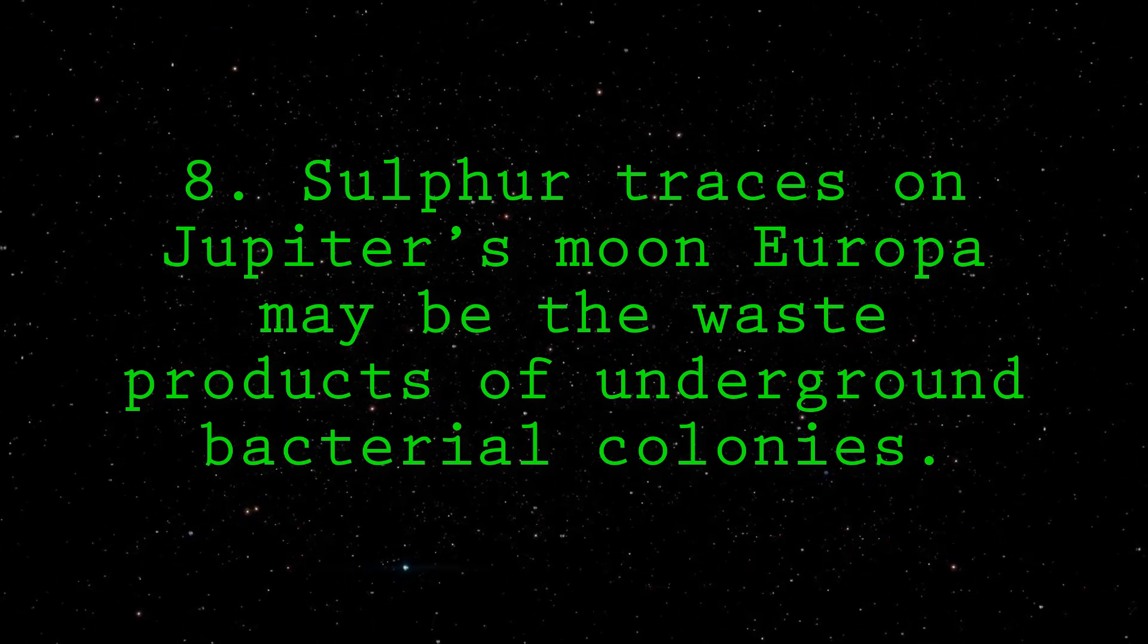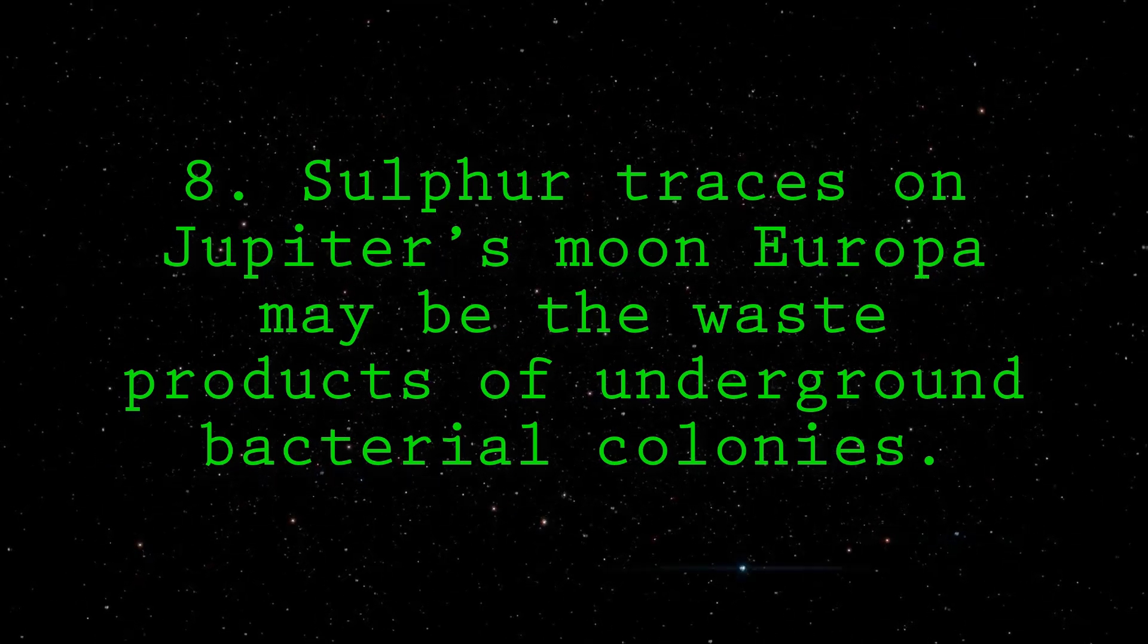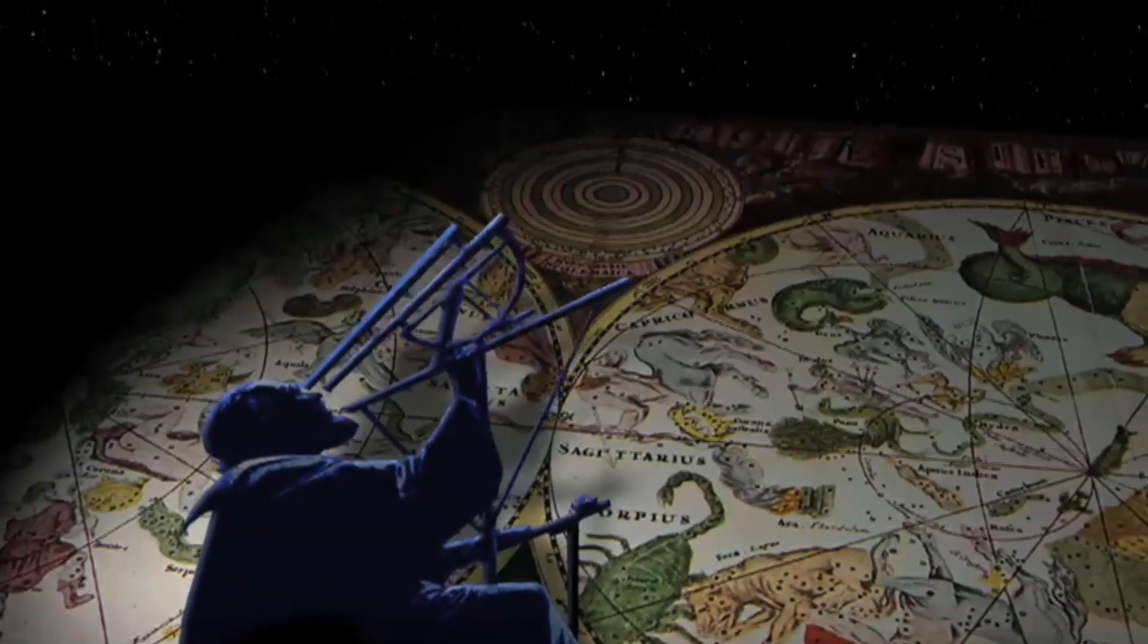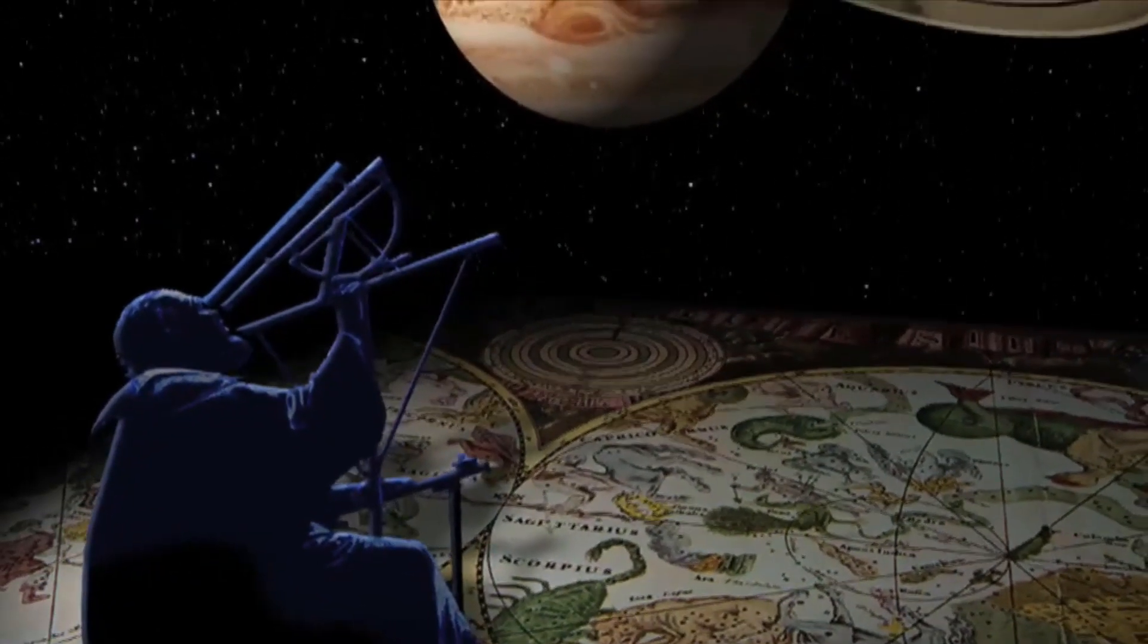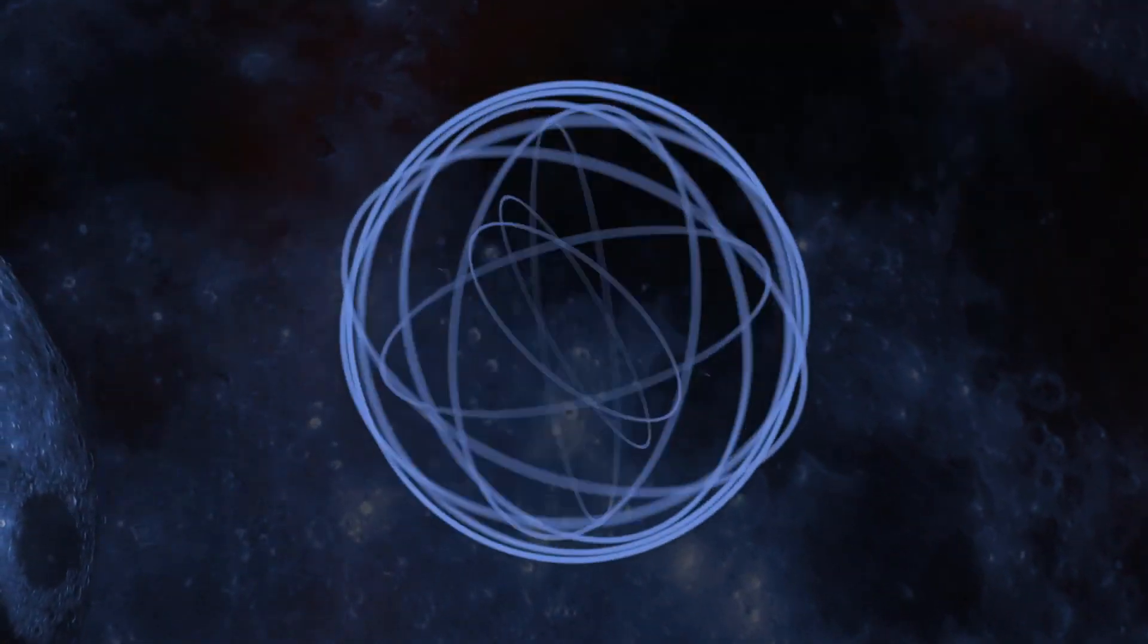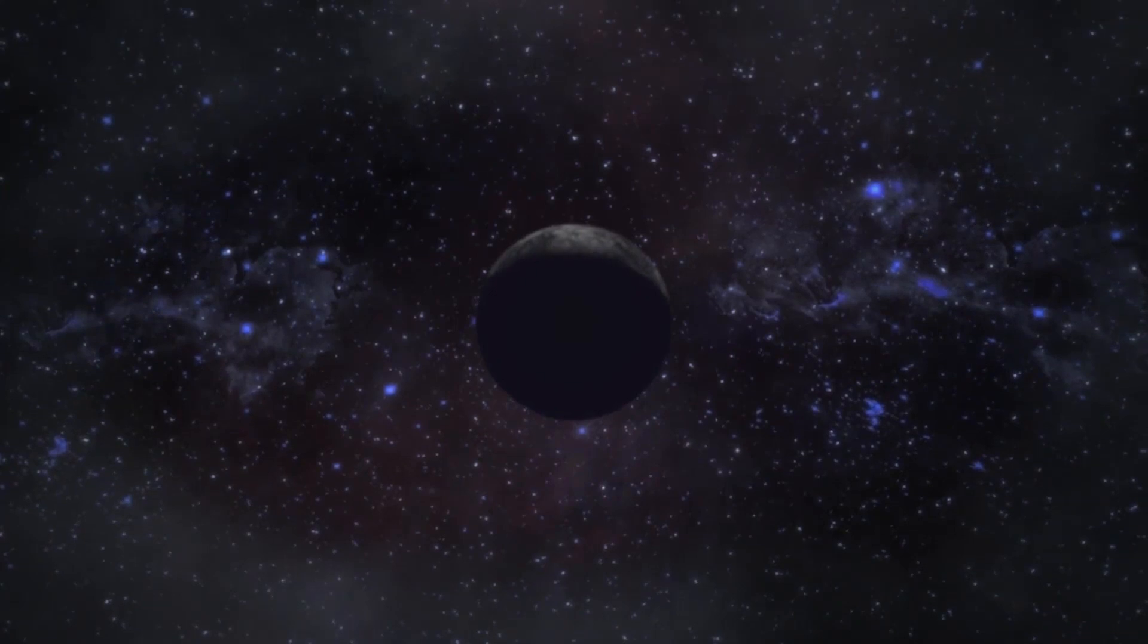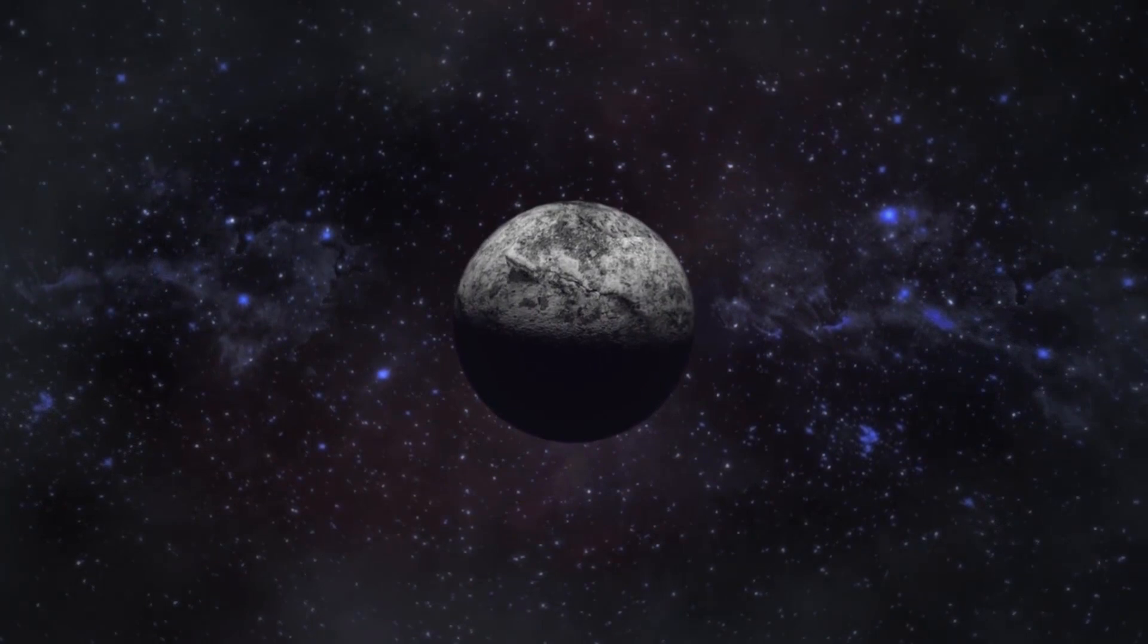Number 8. Sulfur traces on Jupiter's moon Europa may be the waste products of underground bacterial colonies. In 2003, Italian scientists hypothesized that sulfur traces on Europa might be a sign of alien life. The compounds were first detected by the Galileo space probe, along with evidence for a volcanically warmed ocean beneath the moon's icy crust. The sulfur signatures look similar to the waste products of bacteria, which get locked into the surface ice of lakes in Antarctica on Earth. The bacteria might survive in the water below, and similar bacteria might also thrive below Europa's surface, the researchers suggest.